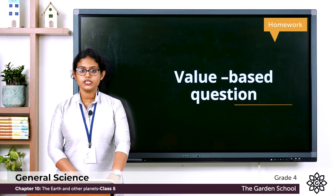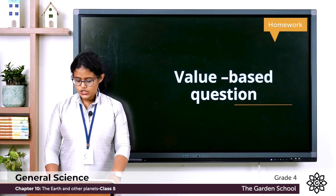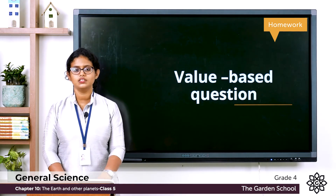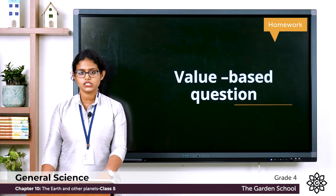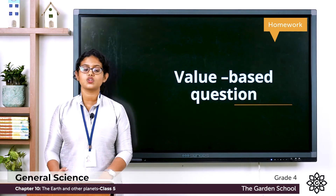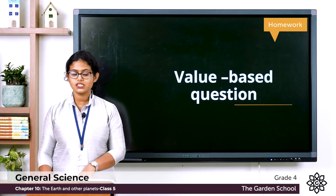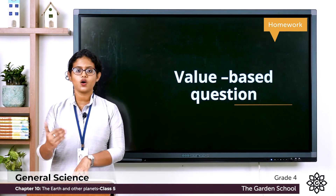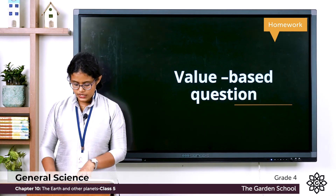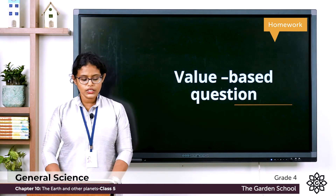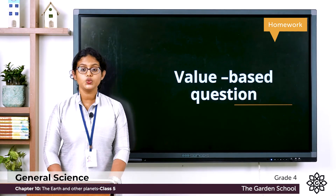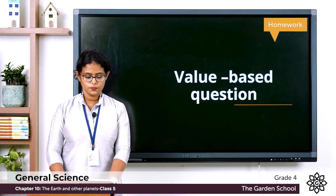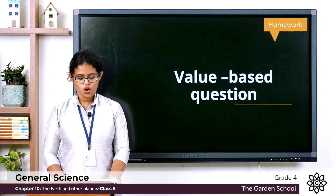The next one is the value-based question. There are about seven practices given and you have to tick the ones you follow to save the earth: I will not waste paper; I will grow more trees; I will use water carefully; I will use my bicycle to go to nearby places; I will use plastic bags when I go shopping; I will use my eraser only when required; I will write on only one side of my notebook.